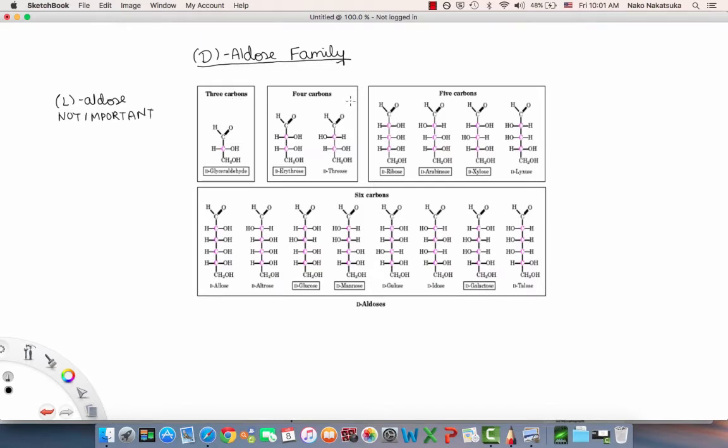When we have aldotetrosis with four carbons, now we have two stereocenters, right? And that means we have four stereoisomers. So that means we're going to have two D-isomers and two L-isomers, and in this case you're seeing the two D-isomers.